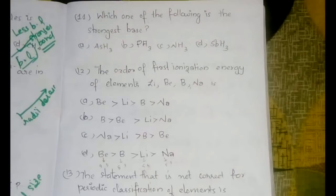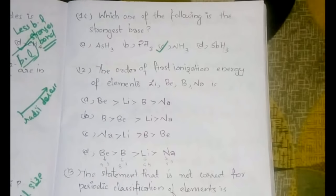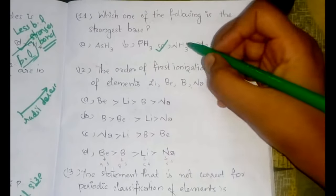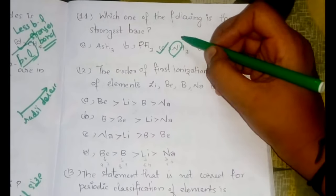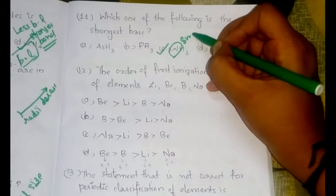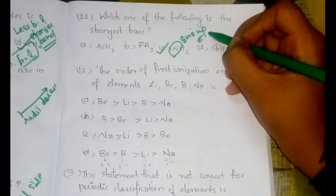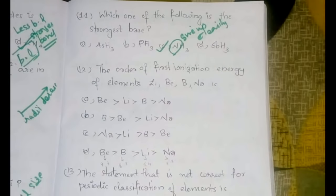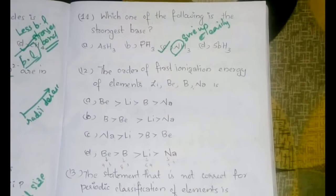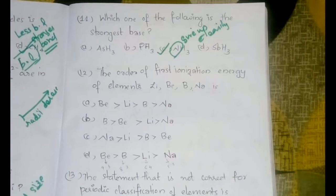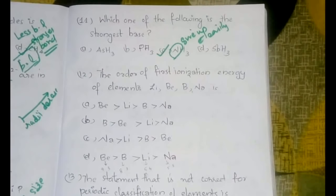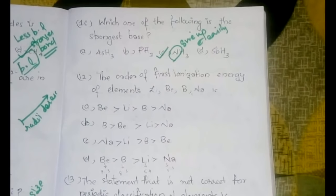The eleventh question: which one of the following is the strongest base? The strongest base would be NH3. It is because nitrogen is the smallest among the elements in these compounds, and therefore it can give up electrons easily. Since a base gives up electrons easily, due to the smaller size of nitrogen, it would be easier to donate electrons, making NH3 the strongest base.